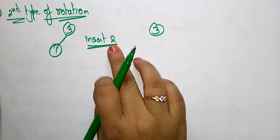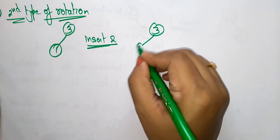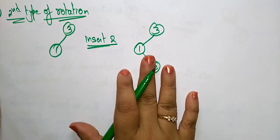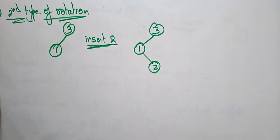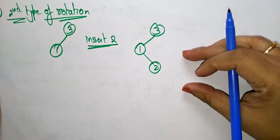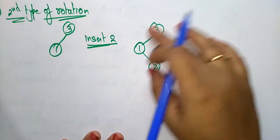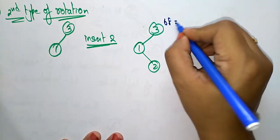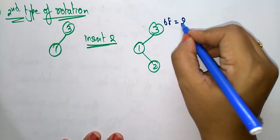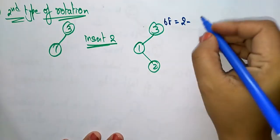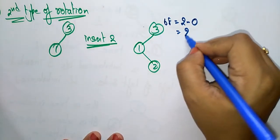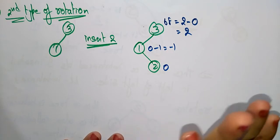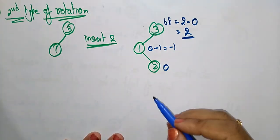Since 2 is less than 3, it goes to the left side. Since 1 is already there, 2 is inserted to the right of 1. Now check whether it is a perfectly balanced tree. The balance factor: the height of the left side is 2 and the right side is 0, so the balance factor at the root is 2, and for the other nodes it is 0 and -1.